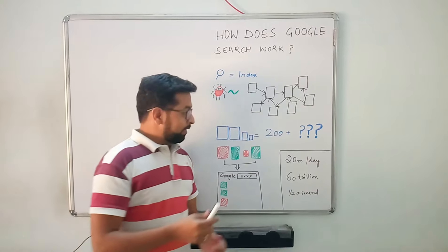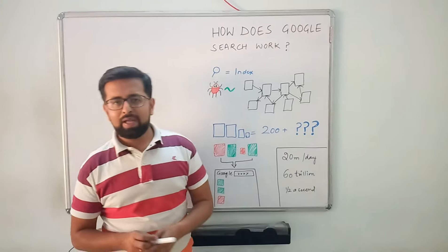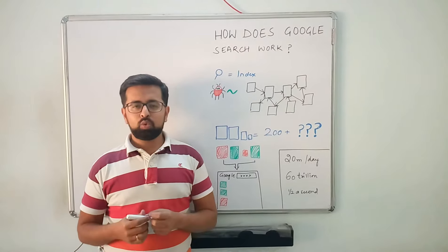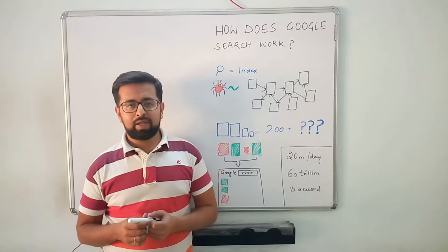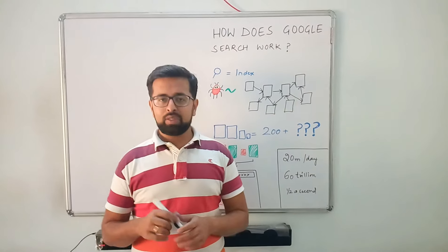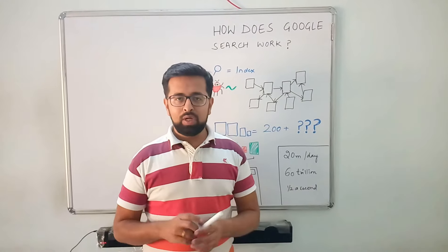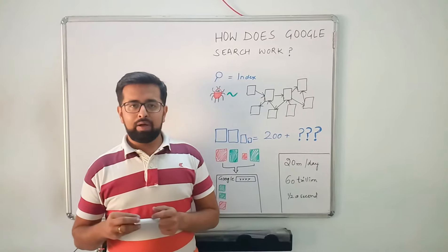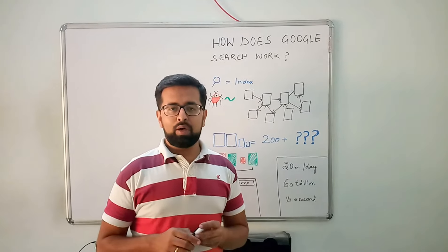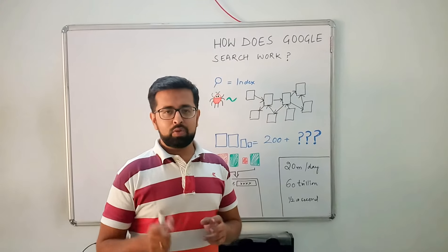There are 20 million searches that happen every day on Google, and I'm sure you're mesmerized by the fact that whenever you search for something, Google gives you results in less than half a second. So what does Google do? What runs in the background? It's time that you know the truth about Google search.